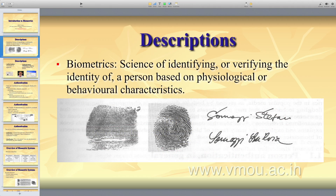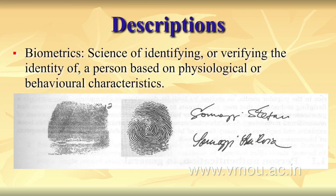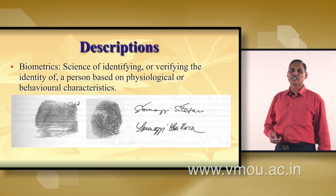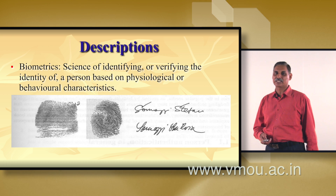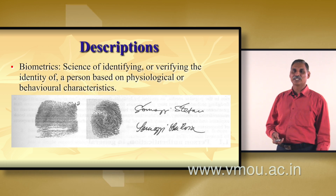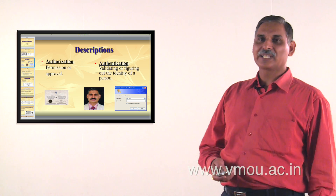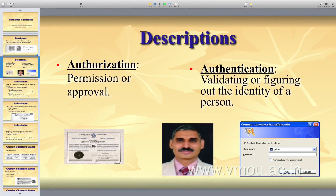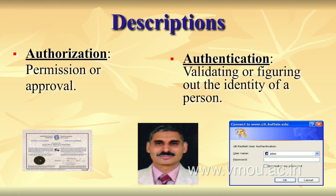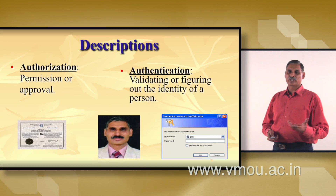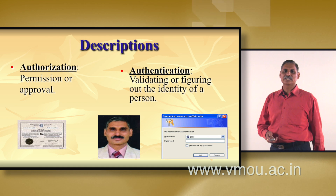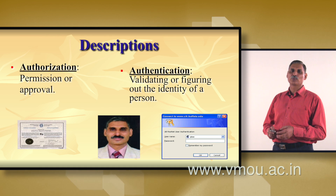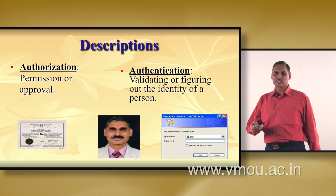Biometrics is a science of identifying or verifying the identity of a person based on physiological or behavioral characteristics like fingerprint, signature, voice, etc. Biometrics considers two parts: authentication — validating or figuring out the identity of a person based on password, photograph, or some identity card — and authorization, where permission or approval is given to enter the system.